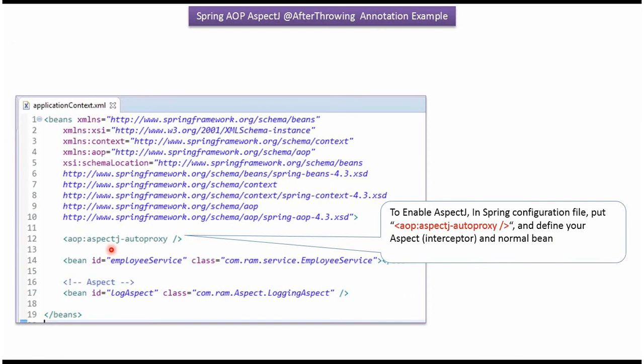To enable AspectJ, we have to add AspectJ AutoProxy and create bean for EmployeeService class and mention aspect classes like LoggingAspect class.